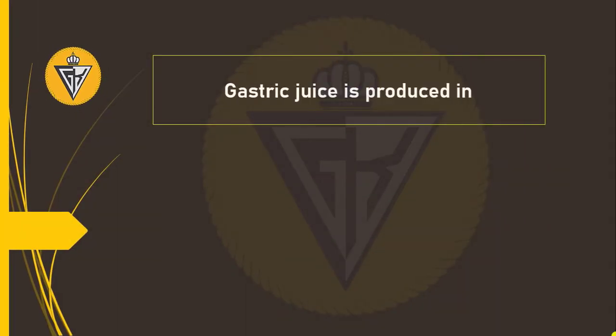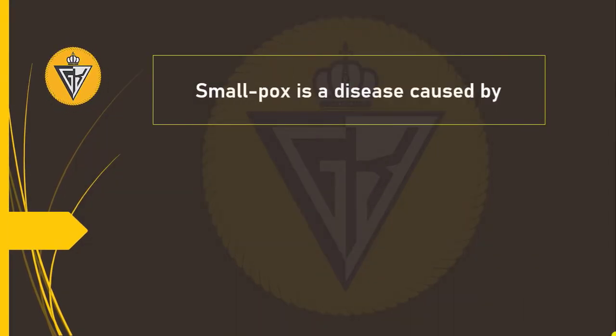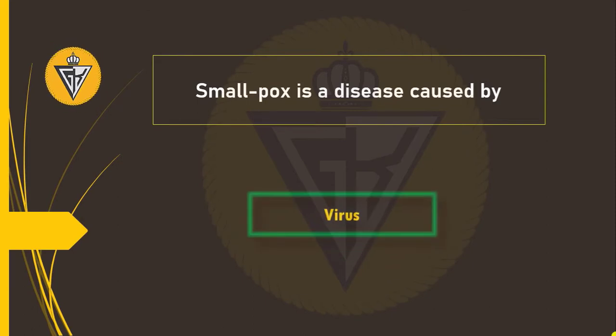Gastric juice is produced in the stomach. Smallpox is a disease caused by a virus.